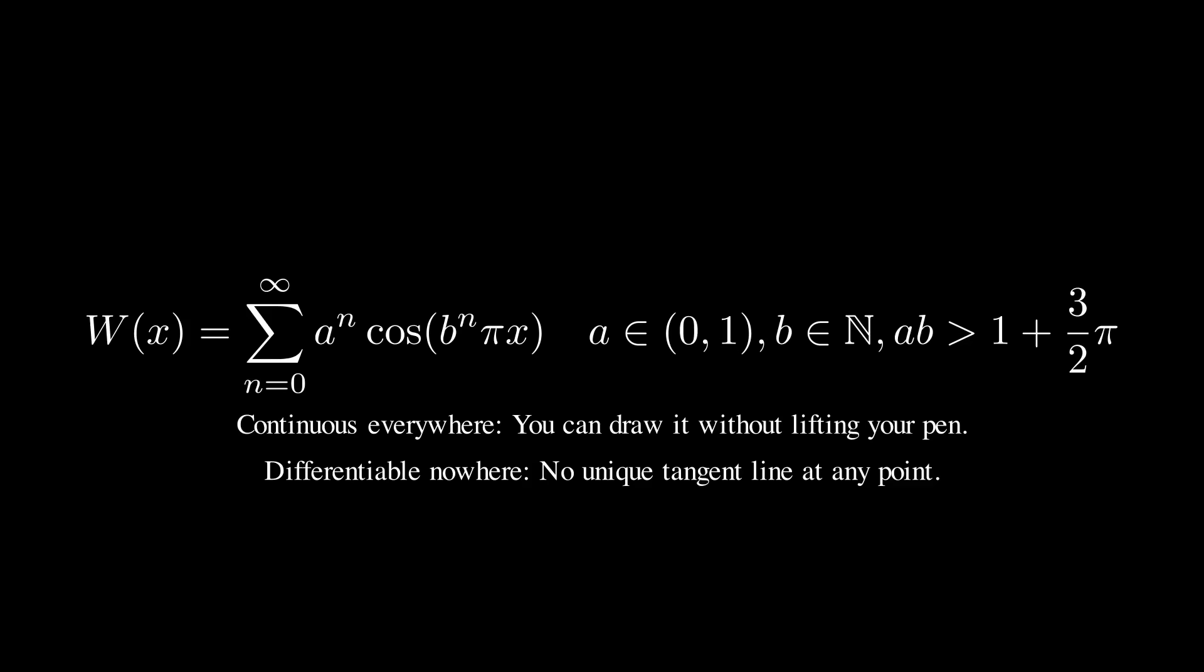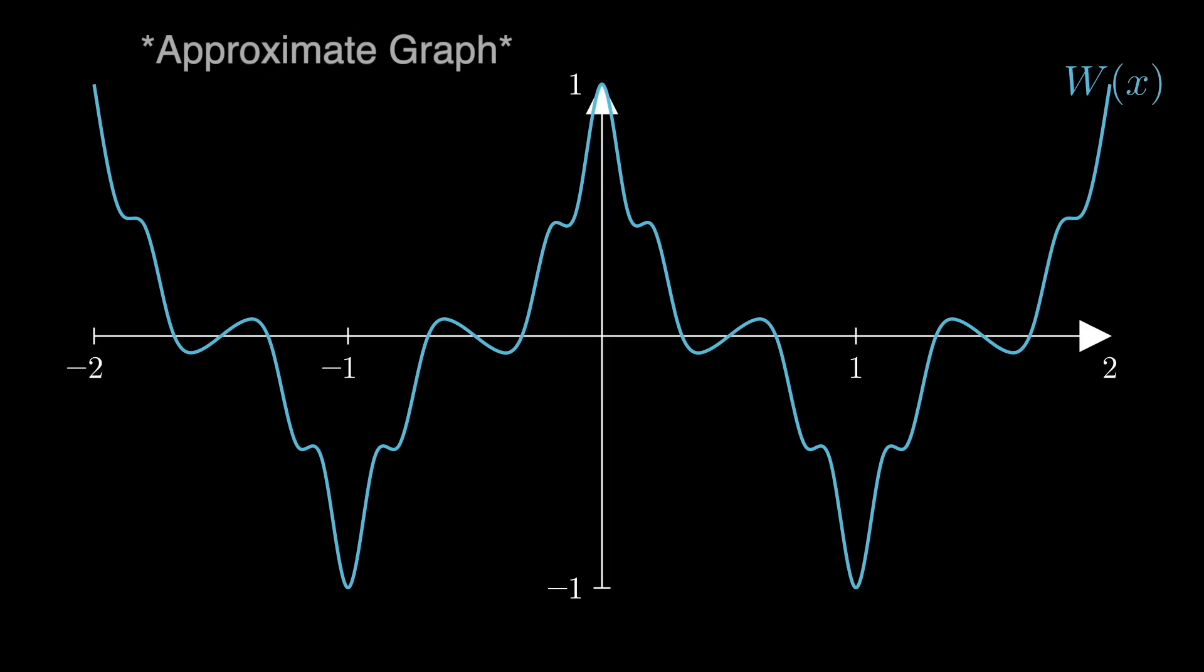In other words, at no point can you find a unique tangent line that perfectly fits the curve. This was a total departure from the intuitive belief that a smooth, continuous curve should be differentiable almost everywhere.